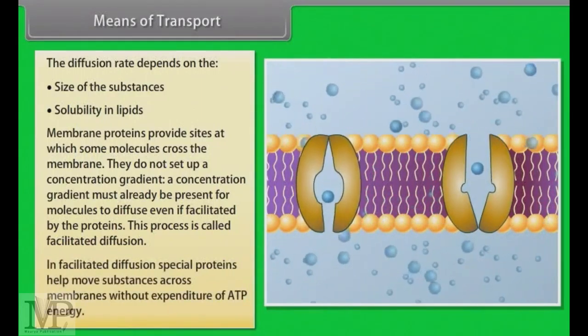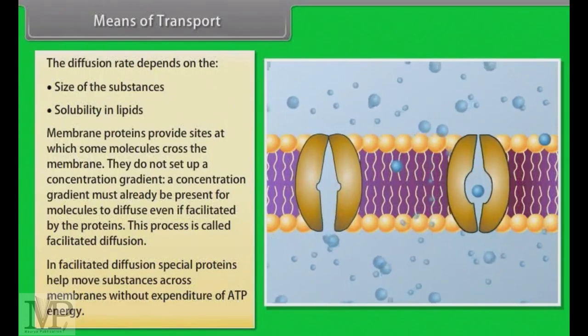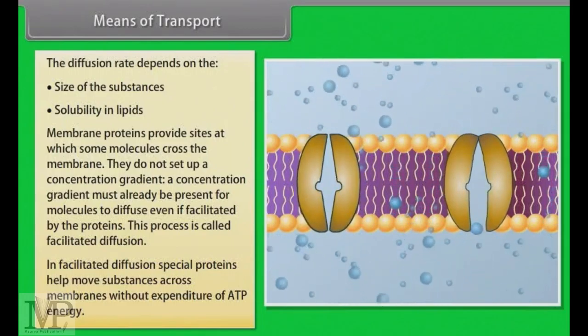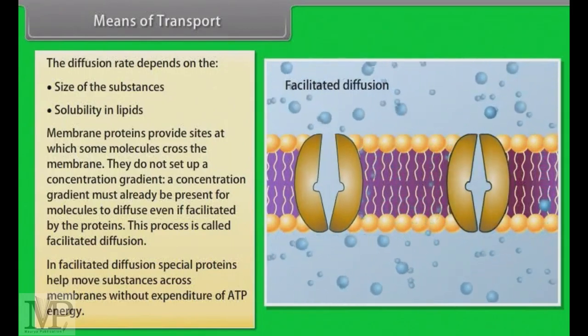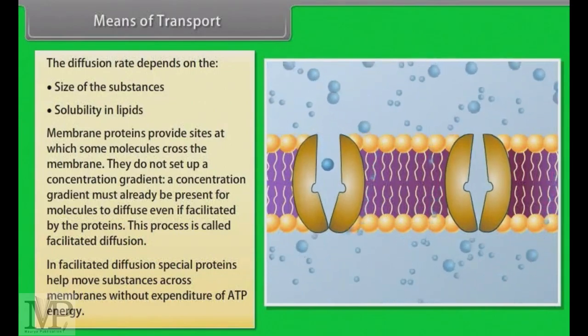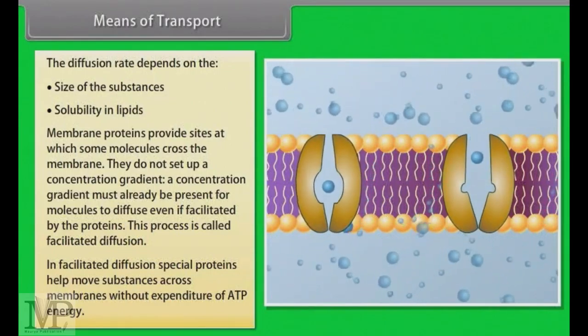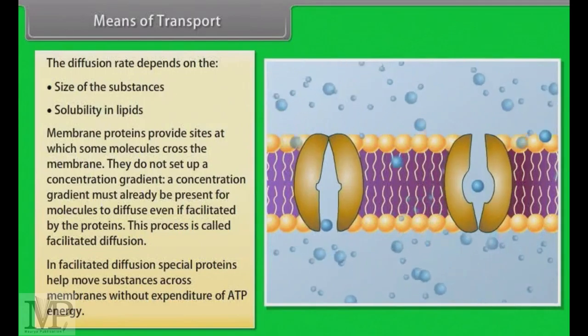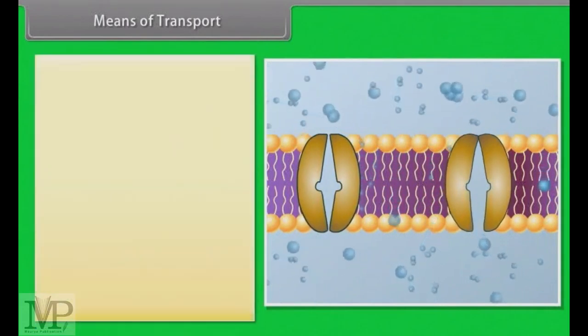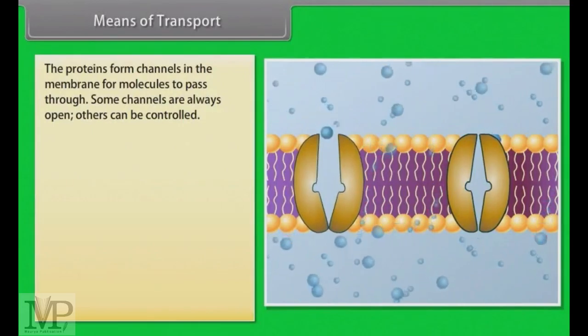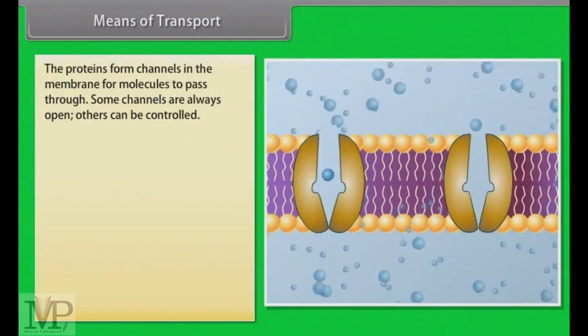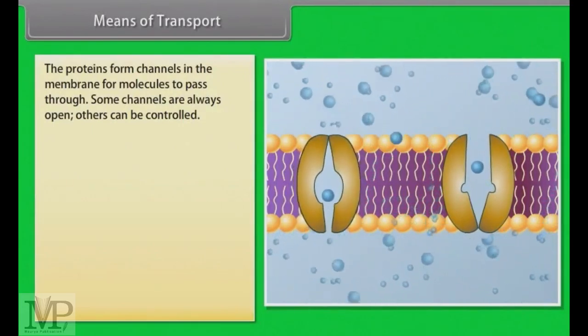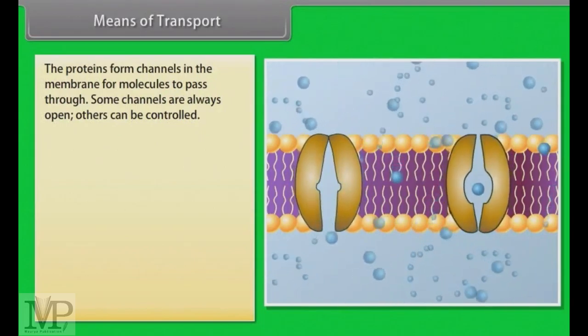This process is called facilitated diffusion. In facilitated diffusion, special proteins help move substances across membranes without expenditure of ATP energy. Facilitated diffusion is very specific. It allows cell to select substances for uptake. The proteins form channels in the membrane for molecules to pass through. Some channels are always open, others can be controlled.